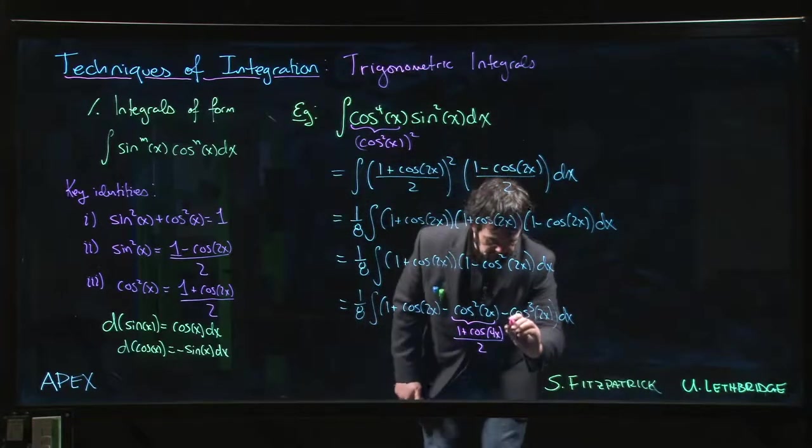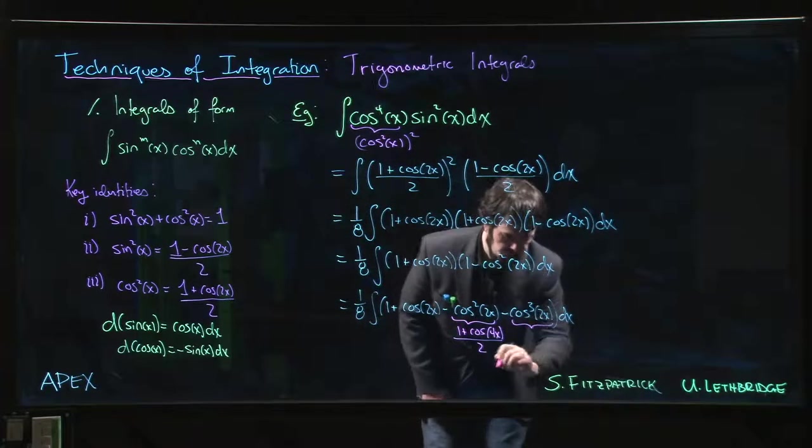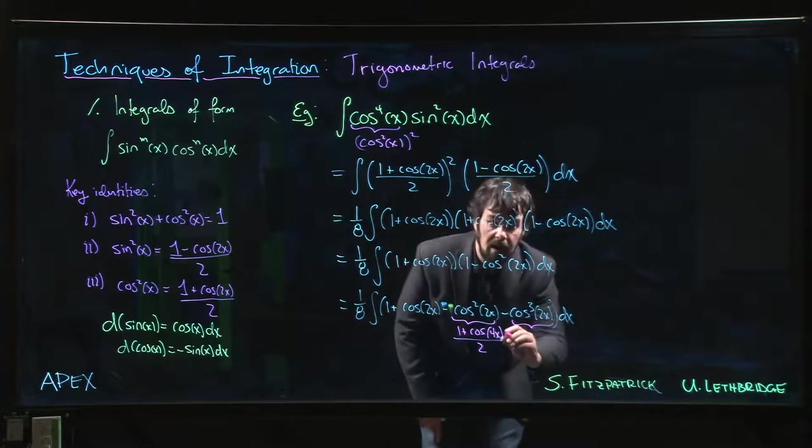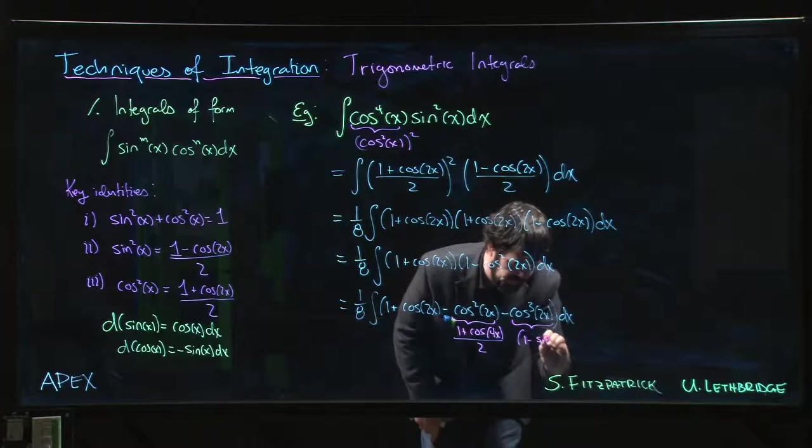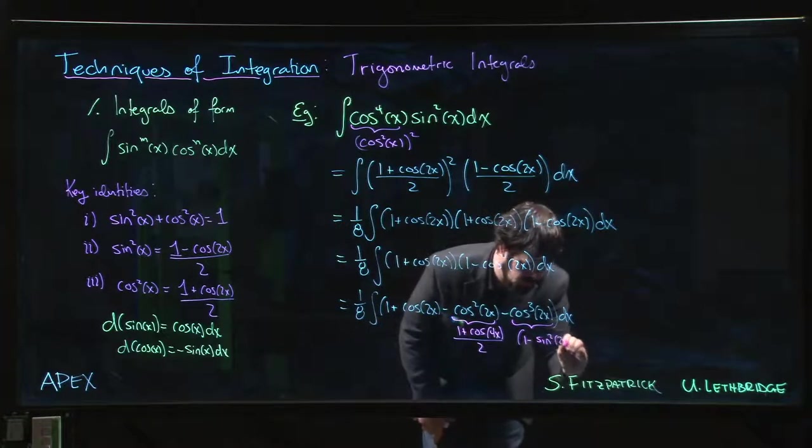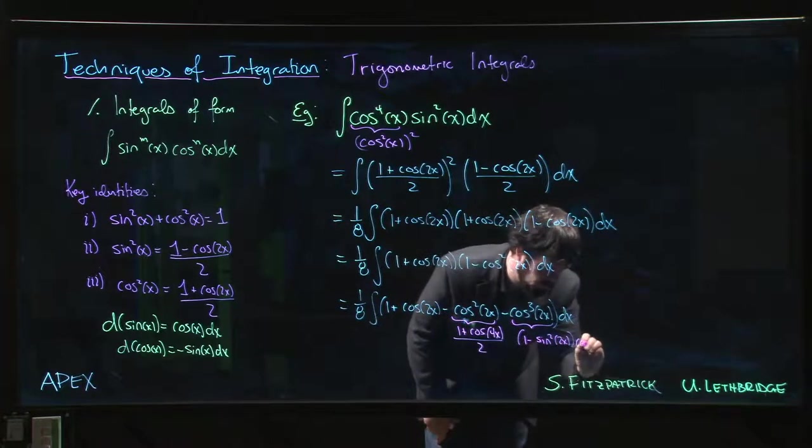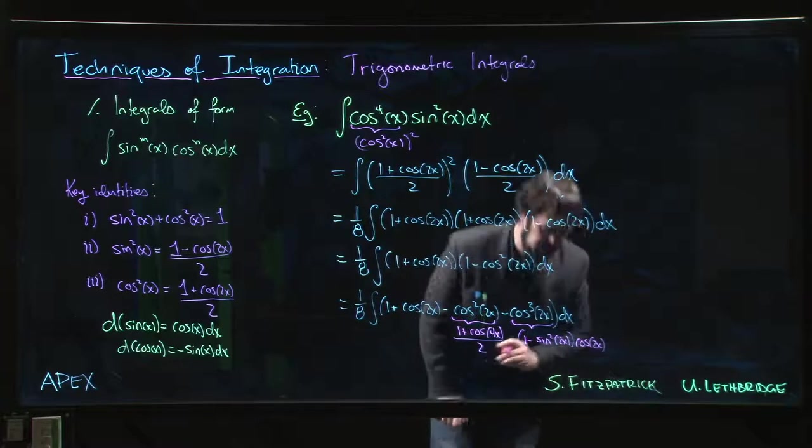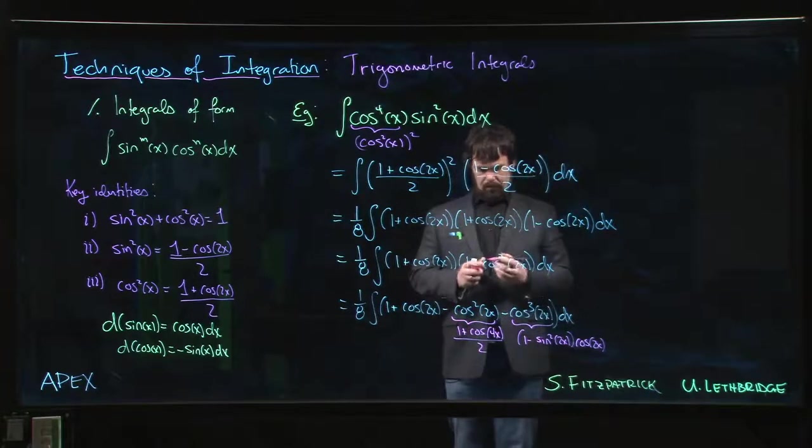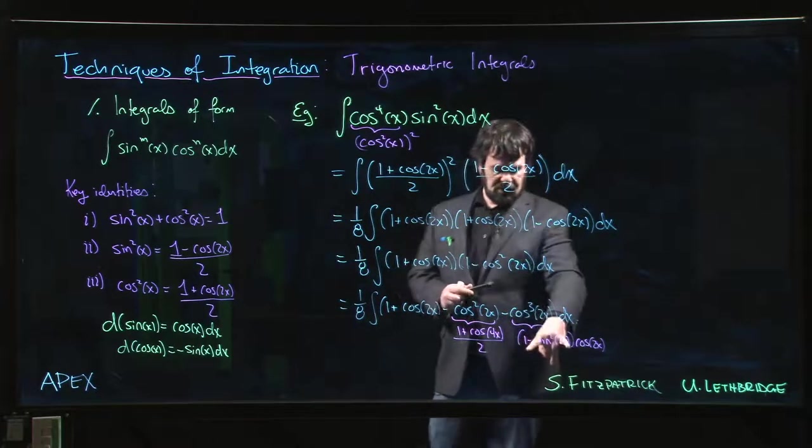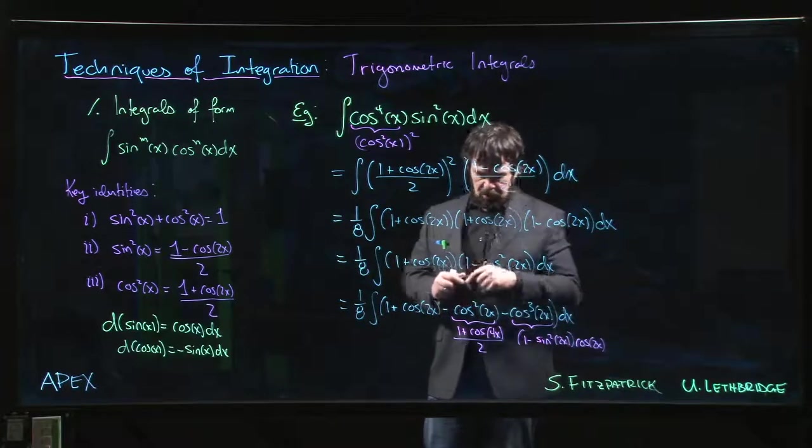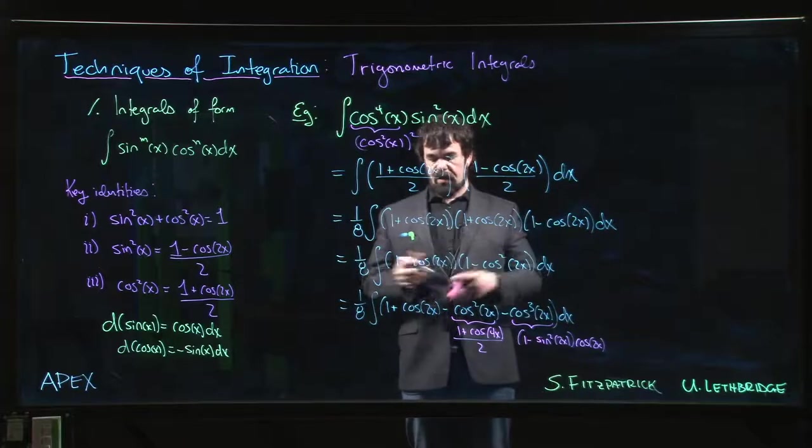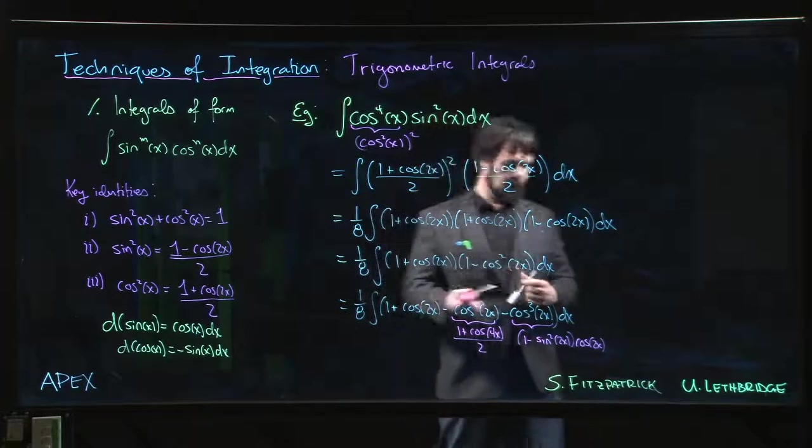And here, well, here now we have an odd power. So we can write this as 1 minus sin squared 2x times cos 2x, because 1 minus sin squared gives me cos squared, cos squared times cos gives me cos cubed. We get to see all the techniques, all rolled into one.